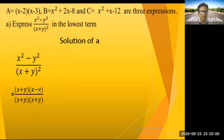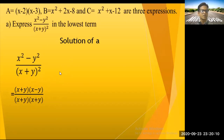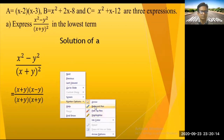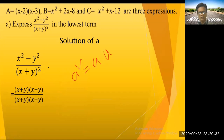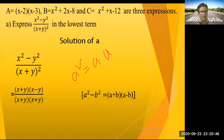And (x + y)² = (x + y)(x + y). So the expression becomes (x + y)(x - y) / [(x + y)(x + y)]. The (x + y) in the numerator and one (x + y) in the denominator cancel out.